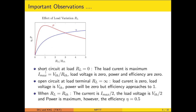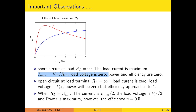If the load resistance value is 0, it represents a short circuit. The voltage across the load will be 0; however, the current will be maximum because the current equals VTH divided by (RTH plus RL) and RL is 0. VTH and RTH are fixed parameters from the linear circuit. So the current is maximum, load voltage is 0, and consequently both power and efficiency are 0.